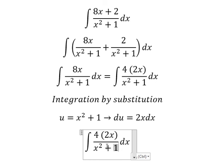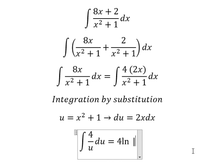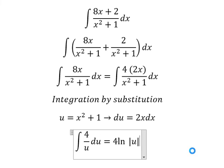This 2x dx we change by du. The integration of 4 over u, we have 4 ln of the absolute value of u.